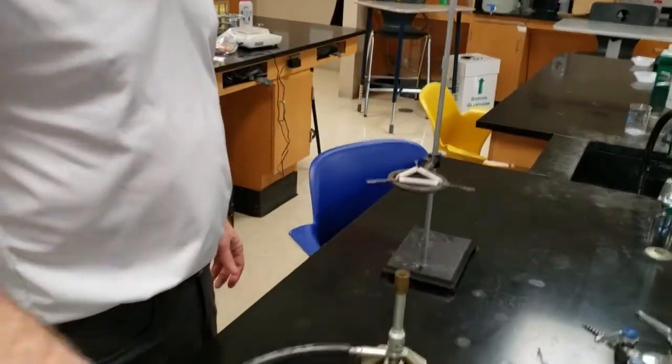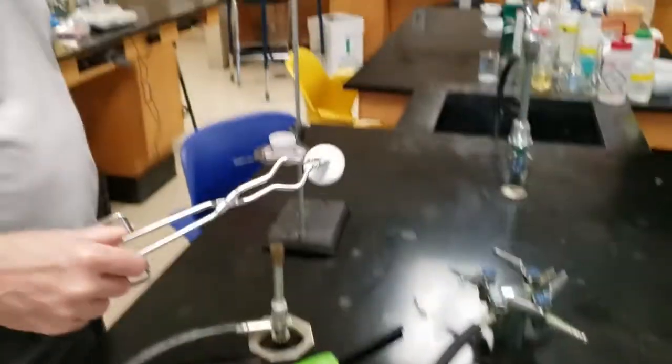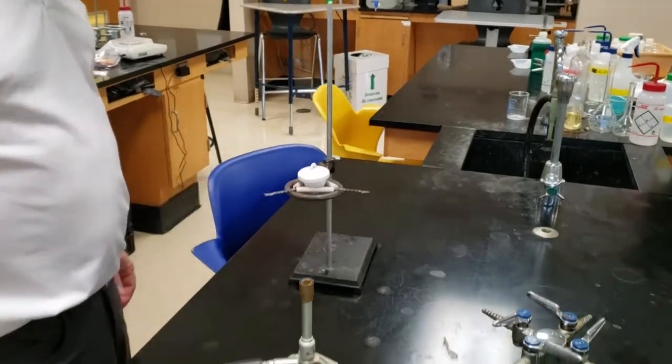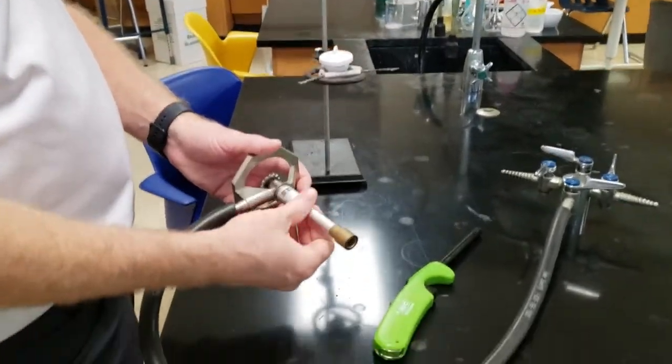Now we're going to use the tongs to put the crucible with the magnesium in the ceramic triangle. If it seems like it's teetering and wants to fall off and break you need to open up the triangle.